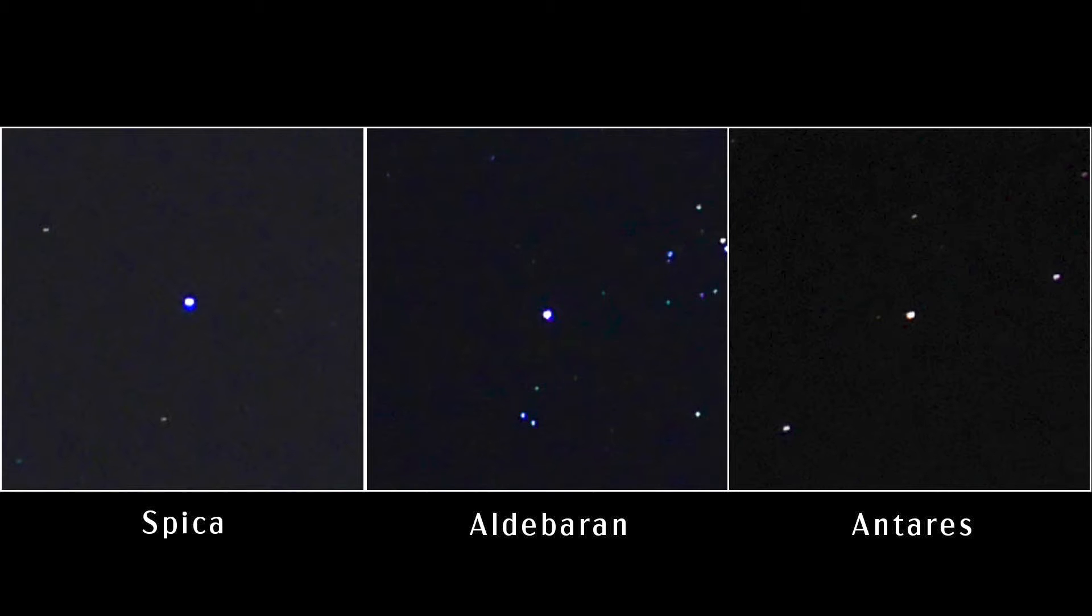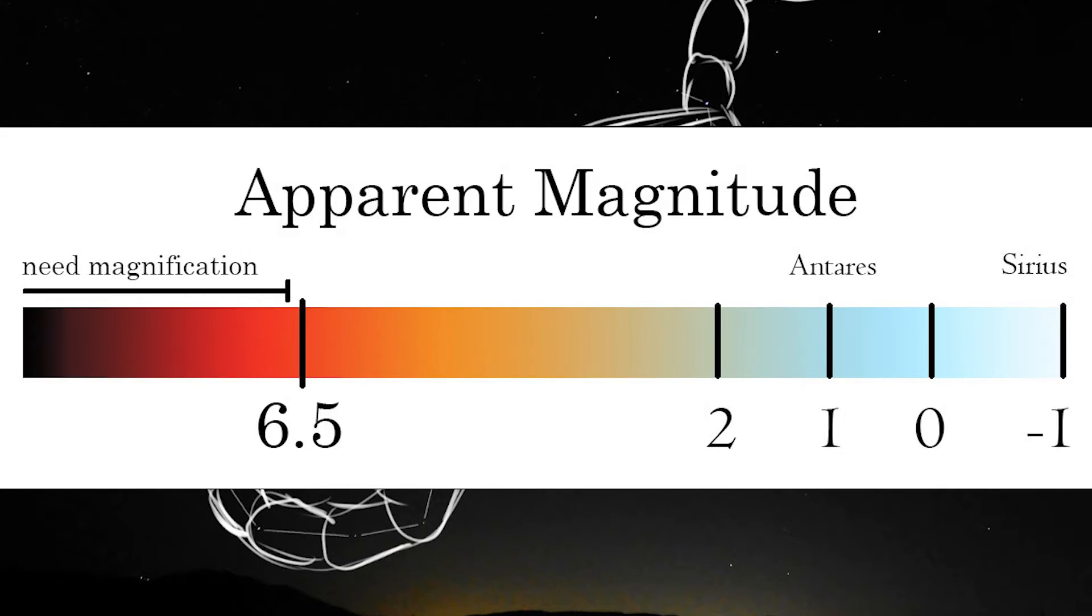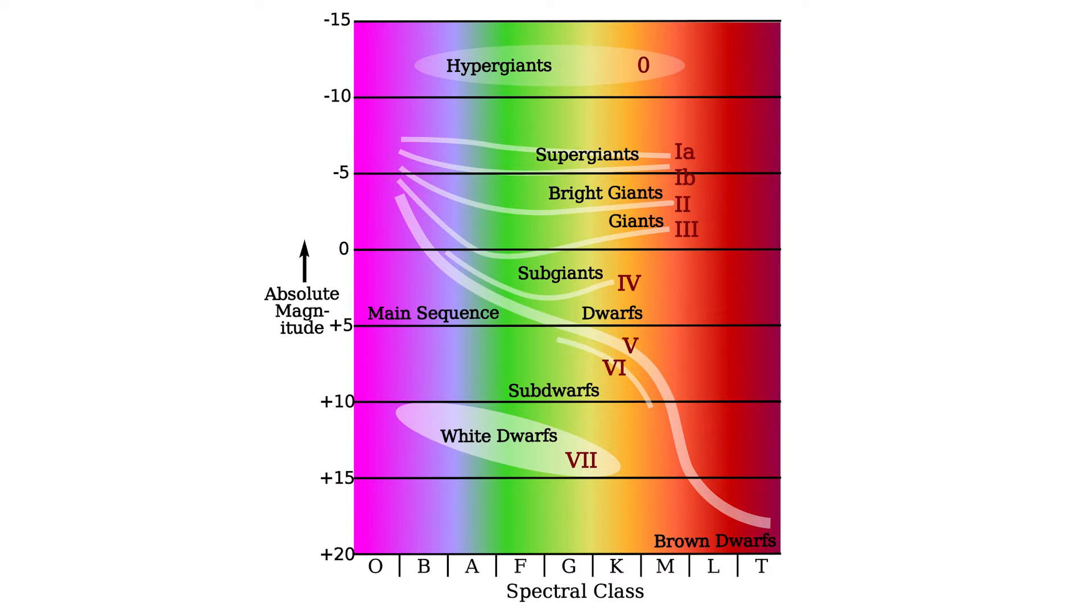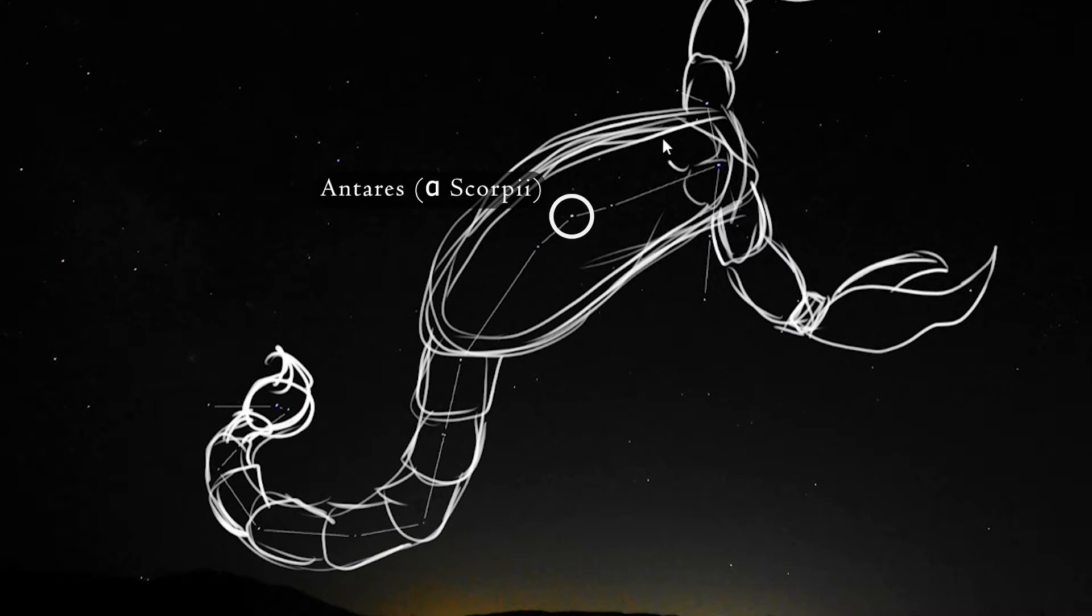Although its brightness varies, it averages a magnitude of about plus one. It is 604 light years away, and is classified as a red supergiant star, which means it is among the most massive and luminous stars. Its circumference is bigger than the orbit of Mars.